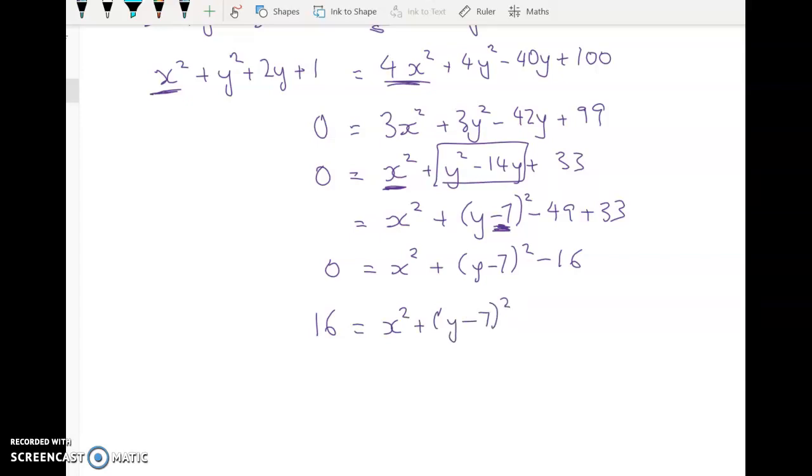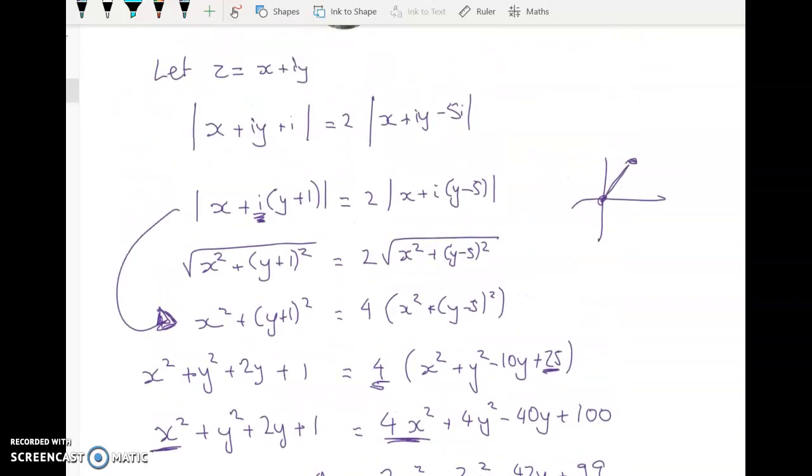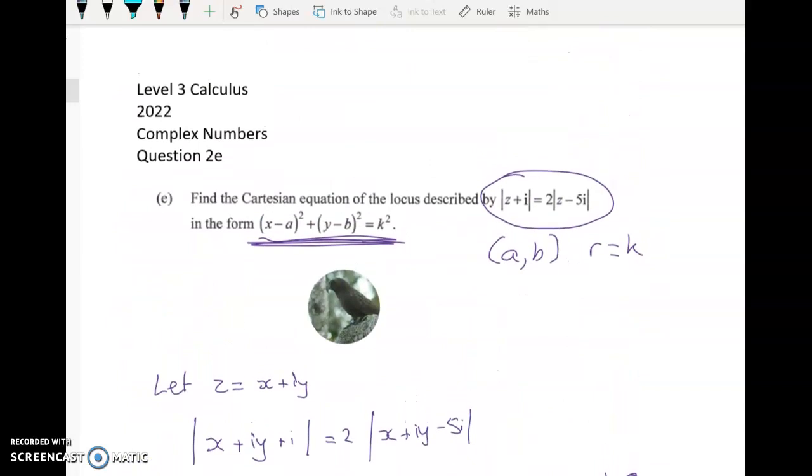Now we weren't asked to write down what it is, but it just sort of feels wrong not to. So it's a circle and it's got a radius of 4, not 16. Radius is 4 and the center is at (0, 7). Let's just go back to the start and just check that we've answered the question. Yep, we had to put it in this form here. So I'm just going to state what a, b and k are.